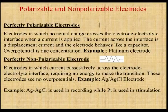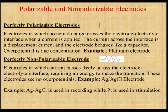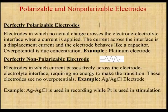Perfectly non-polarizable electrodes allow current to pass freely across the electrode-electrolyte interface, and hence they require no energy for the transfer of ions. An example of a non-polarizable electrode is the Ag/AgCl (silver and silver chloride) electrode. The Ag/AgCl electrode is used for the recording purpose, while the platinum electrode is used for the stimulating purpose. Before going to the recording setup, stimulation is performed using the platinum electrode.